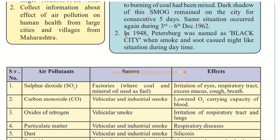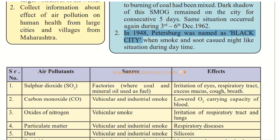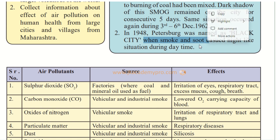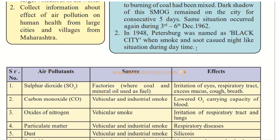In 1948, Petersburg in Russia was named the Black City. Smoke and soot — the black residue from burning — caused a night-like situation during the daytime. It was so dark around the place that it felt like nighttime, which is why the whole city was called a Black City in 1948.